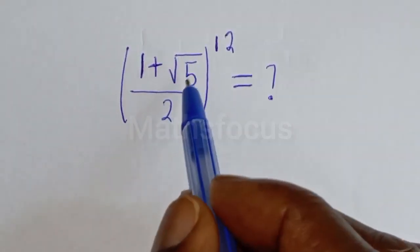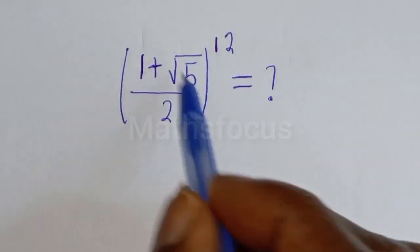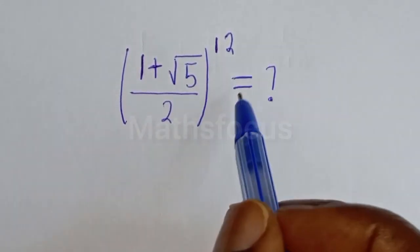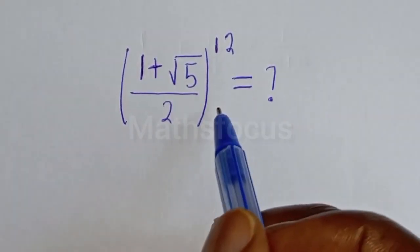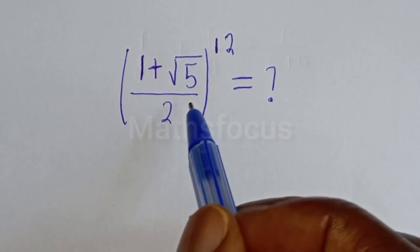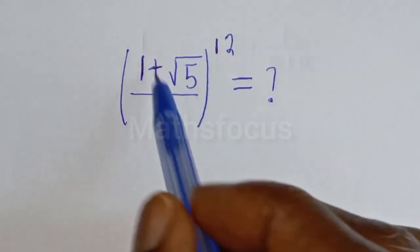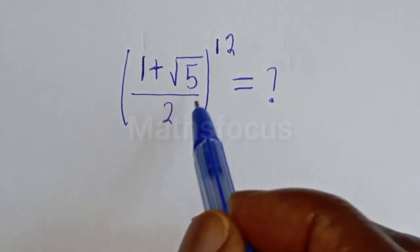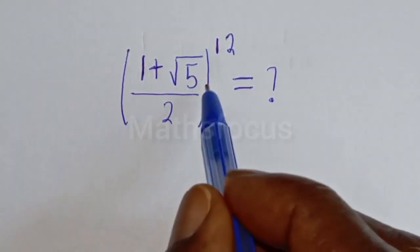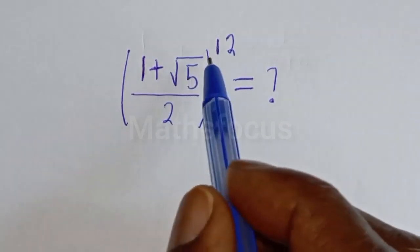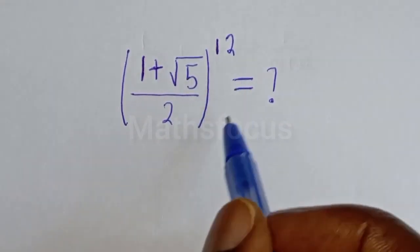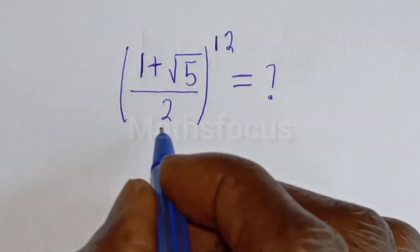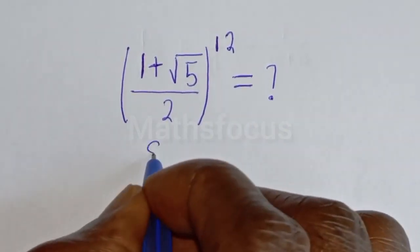1 plus square root of 5 over 2, to the power of 12, is equal to what? Hi everyone, welcome to my class. In this class we want to simplify this math problem. Before we proceed, please don't forget to like, share, comment, and subscribe.